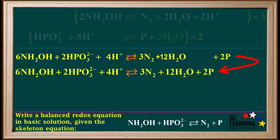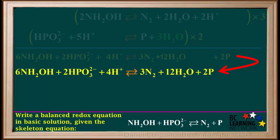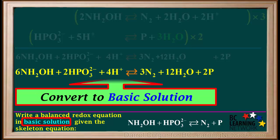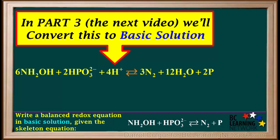We'll rewrite this equation in a more compact form here. So now we have the redox equation balanced in acid solution. At this point, pause the video and check to see that all atoms are balanced and the total ionic charge is balanced. However, the original question wants us to balance this equation in basic solution, so this equation needs to be converted to basic solution. In the next video, which is Part 3, we'll convert this redox equation to basic solution.